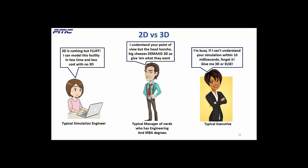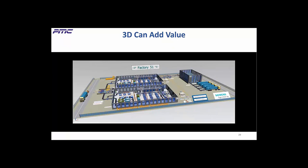Not too long ago, computers were too slow and their memory too limited to allow simulations to include 3D. Most simulation experts would agree that 3D is often nothing but fluff from a simulation analysis and verification viewpoint. But more end users are demanding 3D, and the discrete event software companies have allowed us to provide it. We'll show a 5-minute video that shows off the 3D capabilities of Technomatics Plant Simulation — a 3D view of Plant Simulation's Factory 51 example model, running at a slow speed.